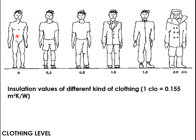For clothing insulation levels: nude is 0 clo; t-shirt and trousers is 0.3 clo; t-shirt and pants is 0.5 clo; business clothing with shirt and suit is 1.0 clo; thermal wear for colder environments is 1.5 clo. The unit conversion is 1 clo equals 0.155 m² kelvin per watt. These two variables — activity and clothing — are the most dependable factors for thermal comfort.